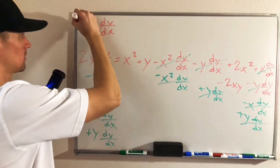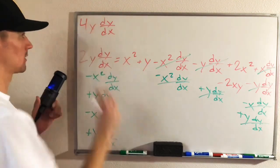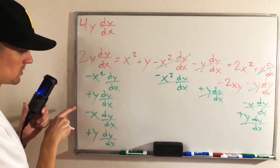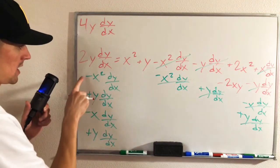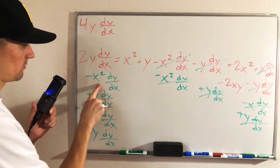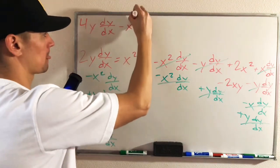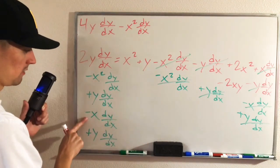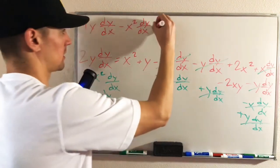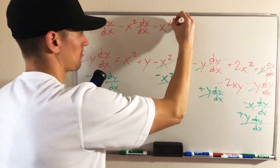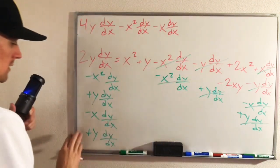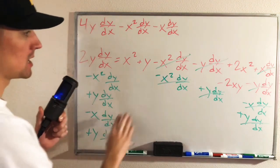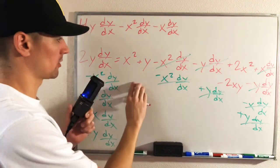And then we also have a negative x squared dy/dx, and then a negative x dy/dx. So that accounts for all of our terms over here on the left side.